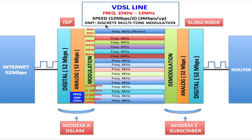We're going to be using a modulation process called DMT, which stands for Discrete Multi-Tone modulation. The way this works is that you're getting 52 megabits per second of digital data coming from the internet and going into your DSLAM. The interface on the DSLAM that connects to the internet is a router interface, so the router part of the DSLAM receives your digital data from the internet and sends it off to the modem area of the DSLAM.